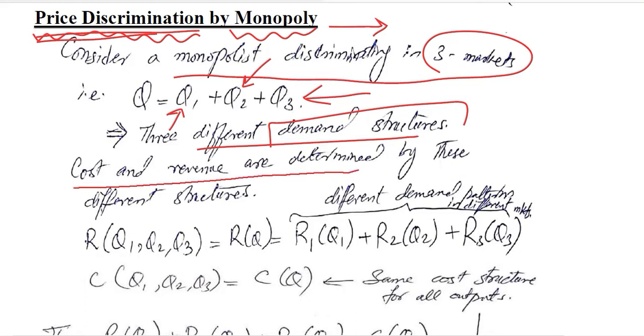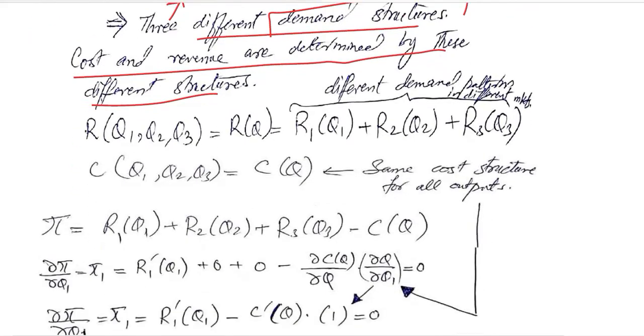Cost and revenue are determined by different demand structures. The revenue function is now dependent upon these three demand structures, and the overall value will be the sum of the three revenues based upon three different demand patterns. The cost function will be based upon the cost incurred in catering the demand in different markets with different demand patterns.